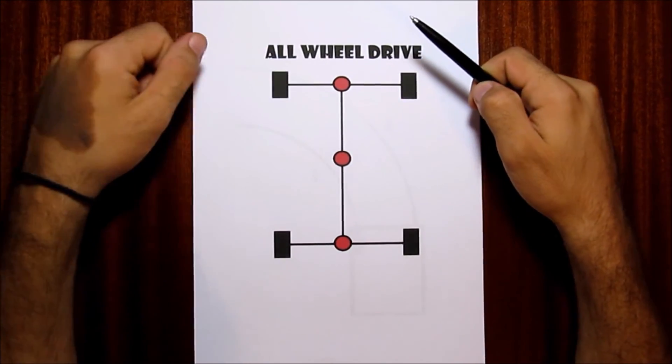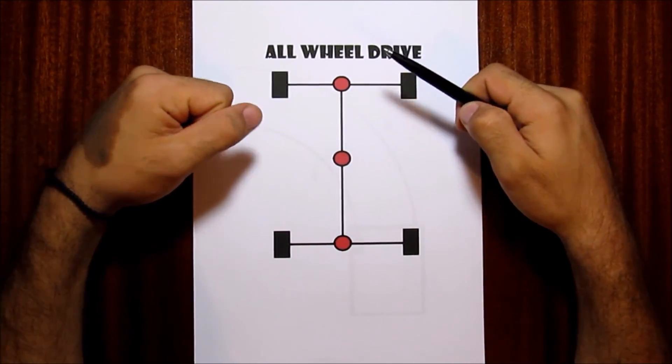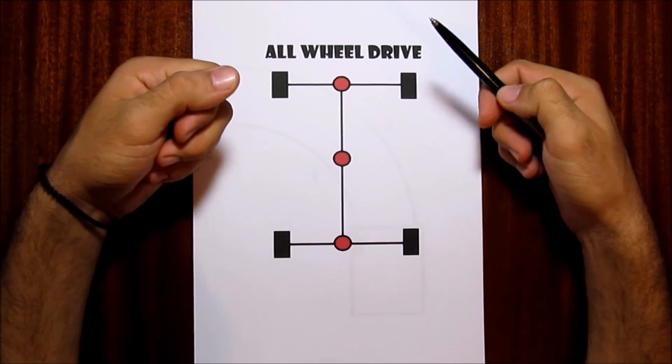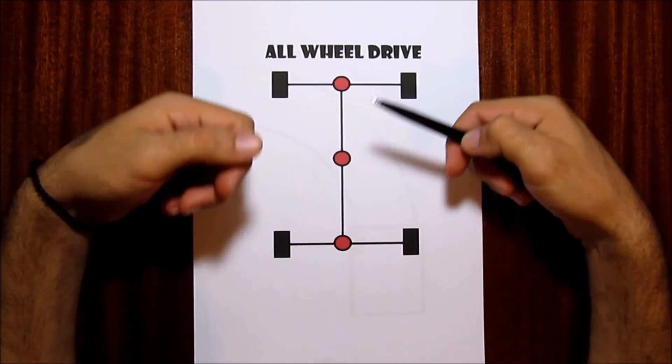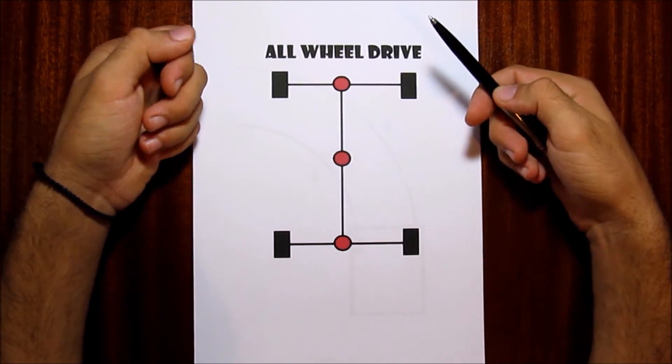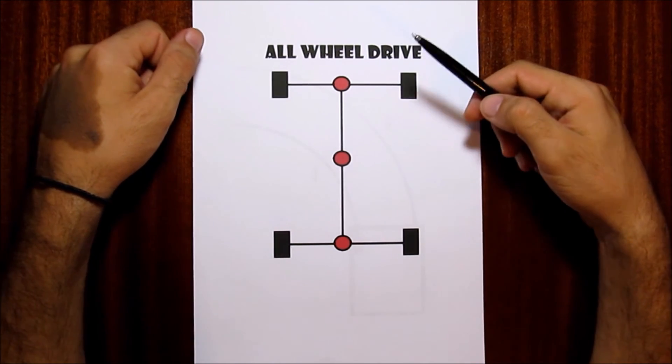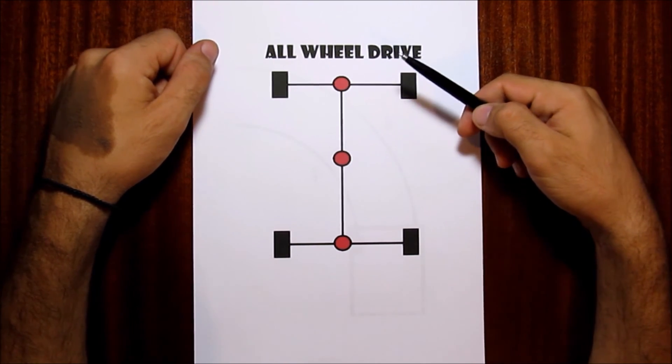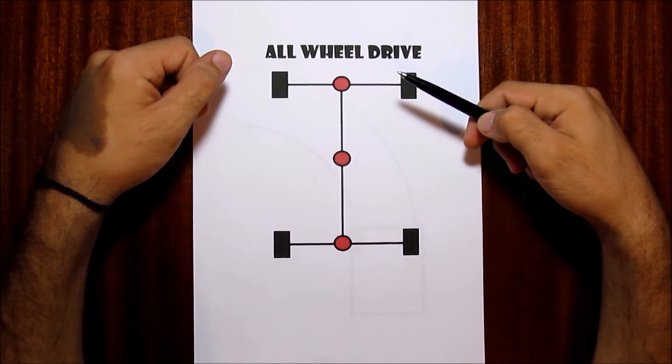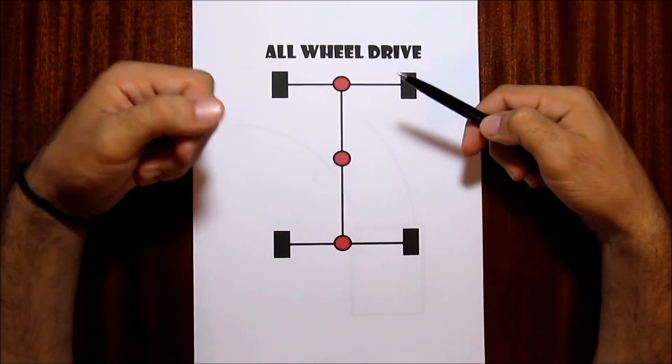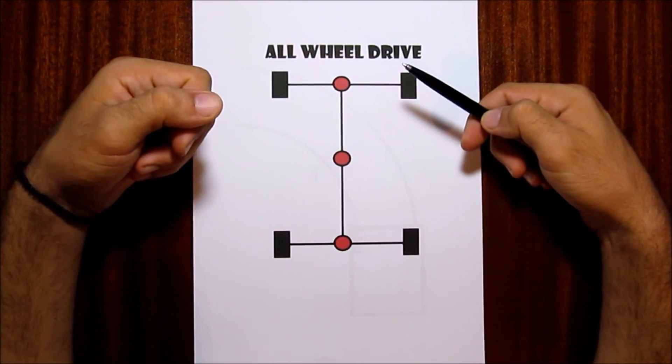To conclude you should remember that a differential allows an outer drive wheel to rotate faster than an inner drive wheel in order for your car to turn. A differential also affects how much torque and top speed your car has. This is because a differential is used as a reduction gear in order to provide the desired ratio.